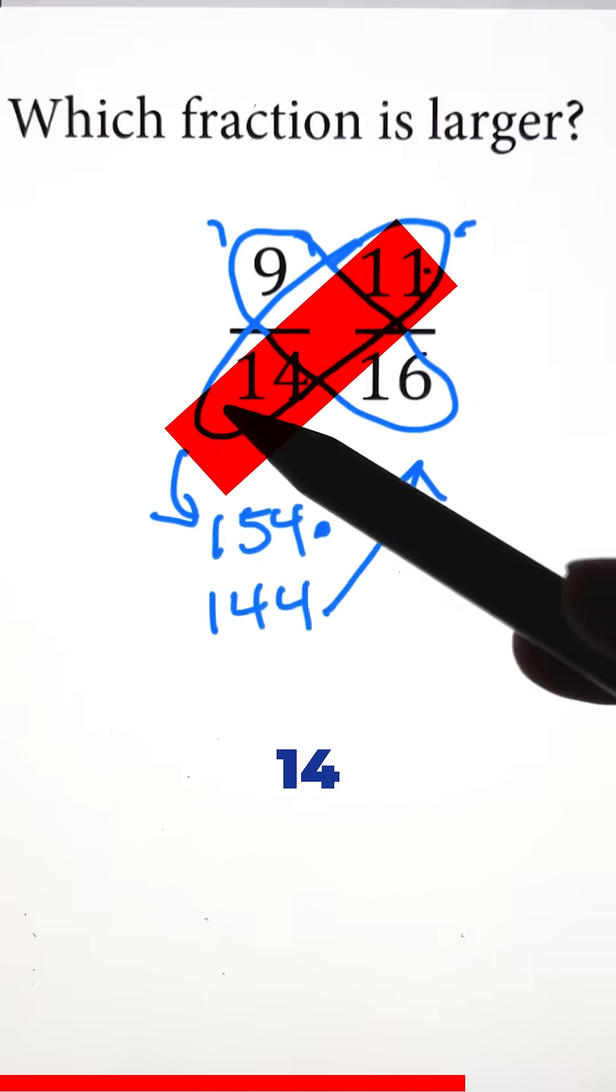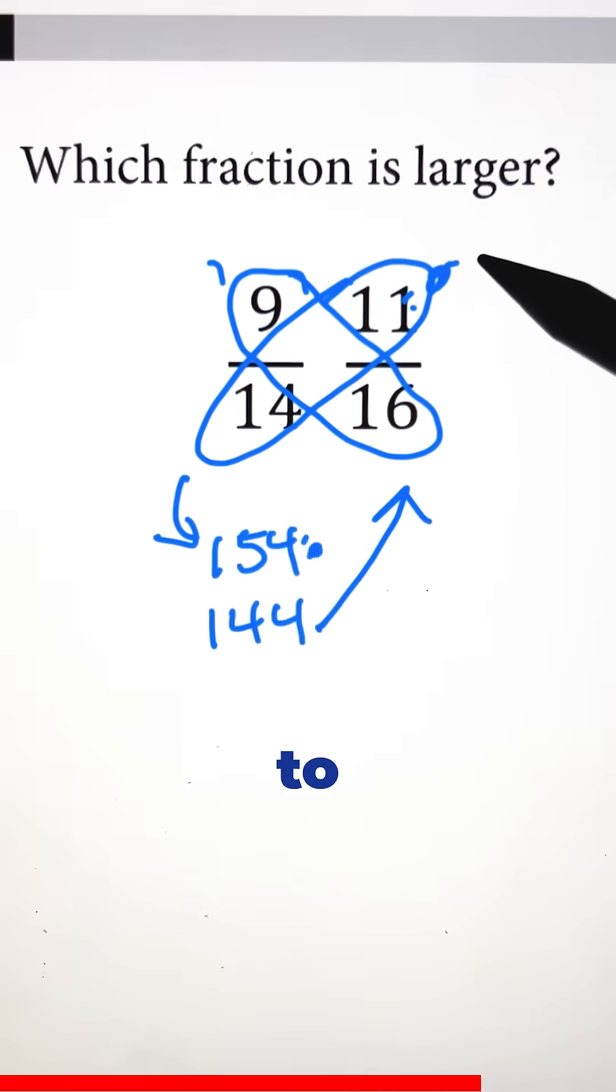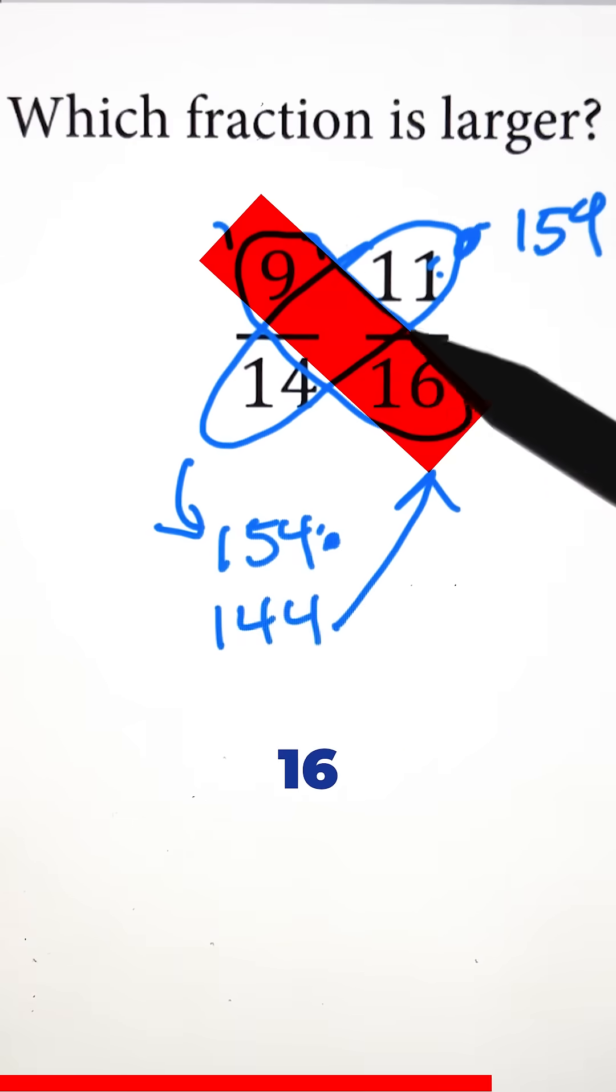If we look at 154: 14 times 11, 11 is the number on top, so 154 goes on this side. And 144: 16 times 9, 9 is on top, so 144 goes on this side.